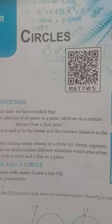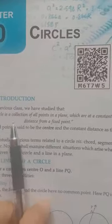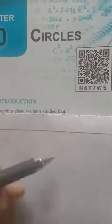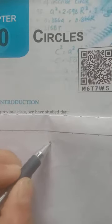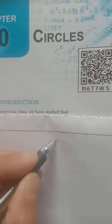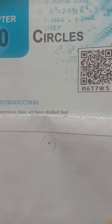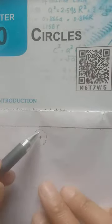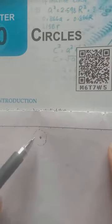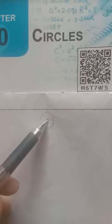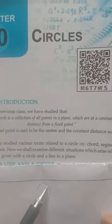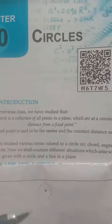Today let us start with circle. What is a circle? A circle is a collection of all points in a plane which are at a constant distance from a fixed point. Suppose we put a fixed point here which we call the center. If we draw many points and measure the distance from the center, you will see that the distance from the center to all those points is the same. Such a figure we call a circle. The fixed point we call the center and the collection of points forms the boundary of the circle.